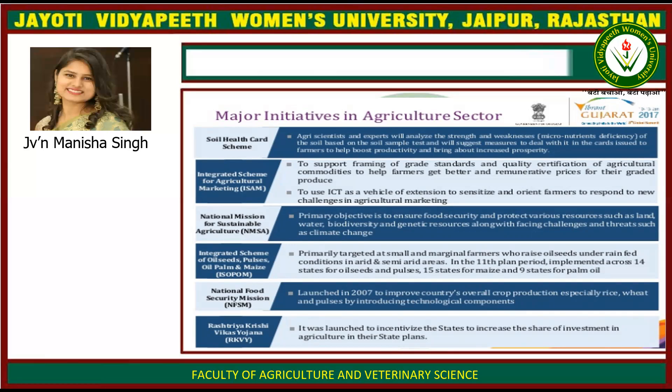The Integrated Scheme of Oilseeds, Pulses, Oil Palm and Maize (ISOPOM) is primarily targeted at small and marginal farmers raising oilseeds under rain-fed conditions in arid and semi-arid areas, implemented across 14 states for oilseeds and pulses, 15 states for maize and 9 states for palm oil. The National Food Security Mission (NFSM), launched in 2007, aims to improve the country's overall crop production — especially rice, wheat and pulses — by introducing technological components.